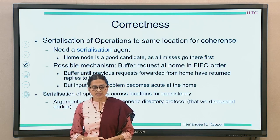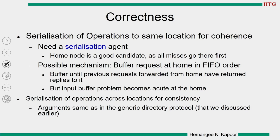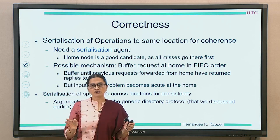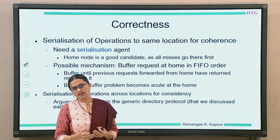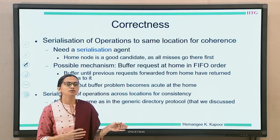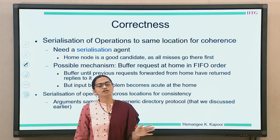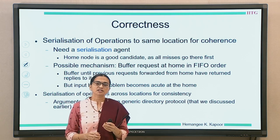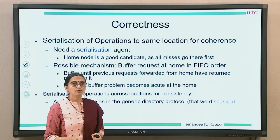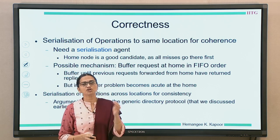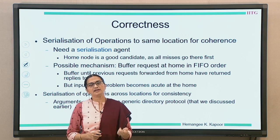For correctness aspects, we are normally going to discuss serialization to a location across locations, and then deadlock, livelock, and starvation related aspects. Serialization of operations across locations when the variable names are different is used for consistency aspects, and the arguments of correctness for this are similar to the arguments we made when we discussed the directory coherence protocol in a generic manner. So there is going to be no change in the proof of correctness for serializing operations across locations. For serializing operations across the same location for coherence, we are going to discuss two examples to see why it is very much required to follow certain discipline when we implement the protocol.